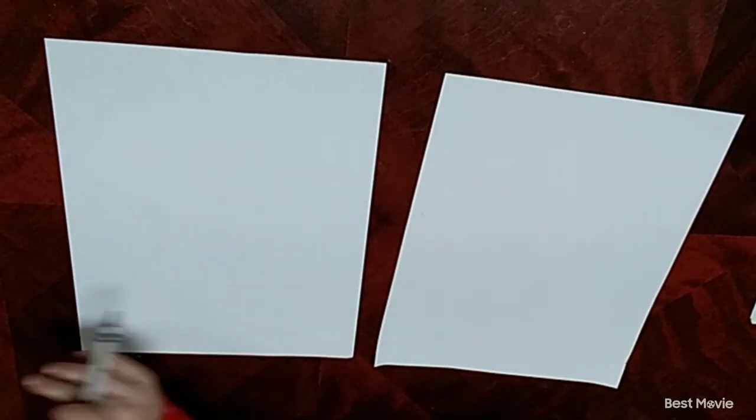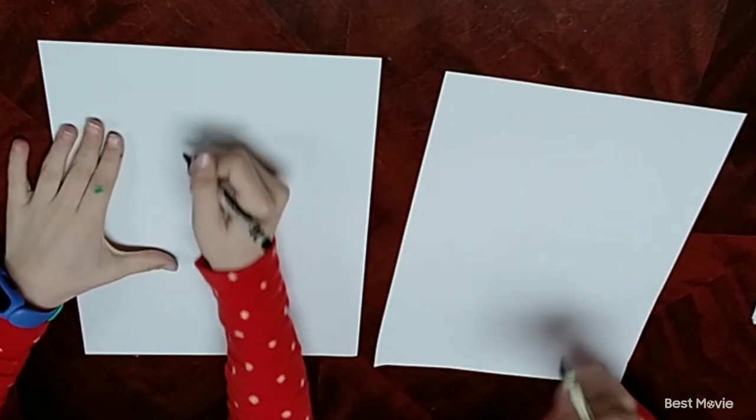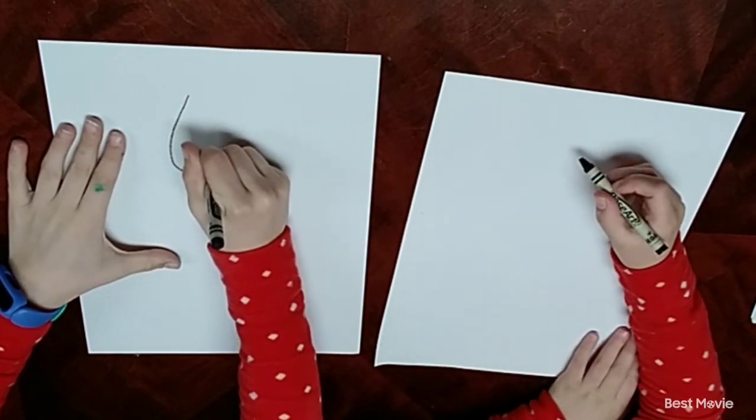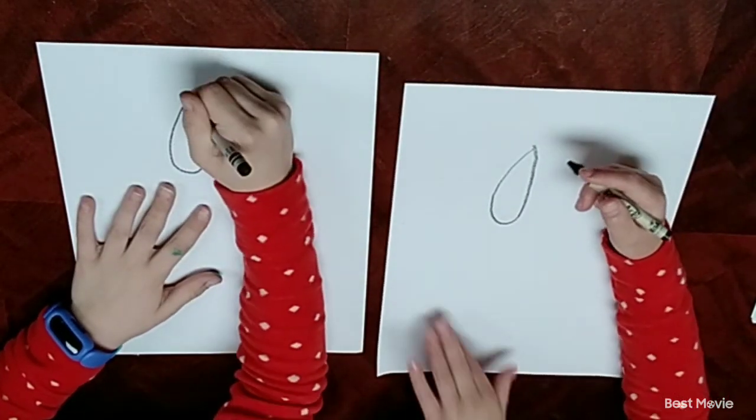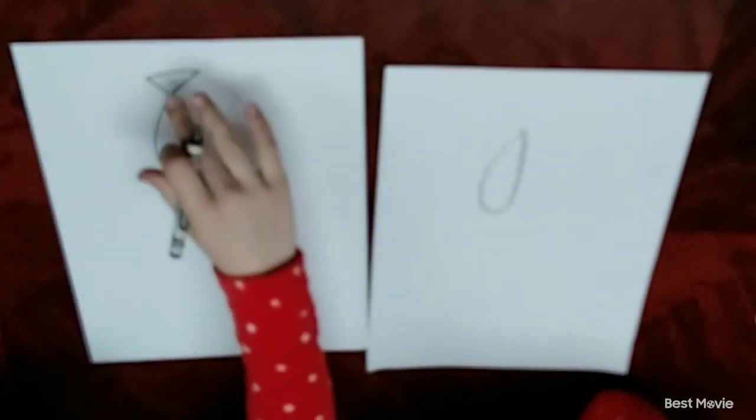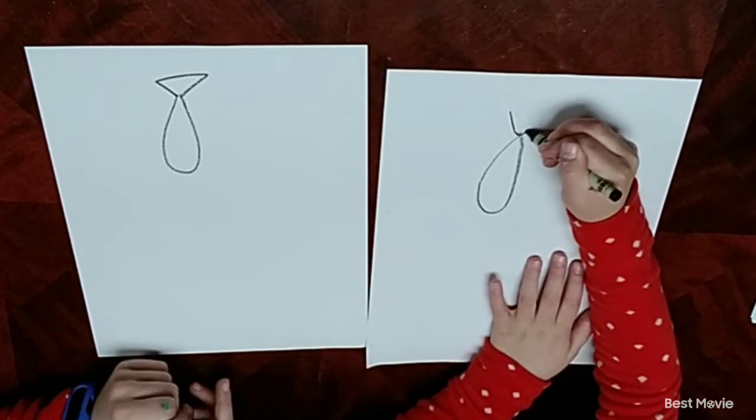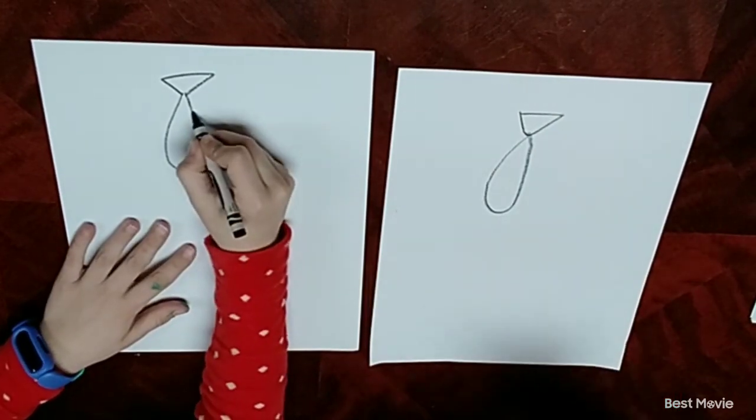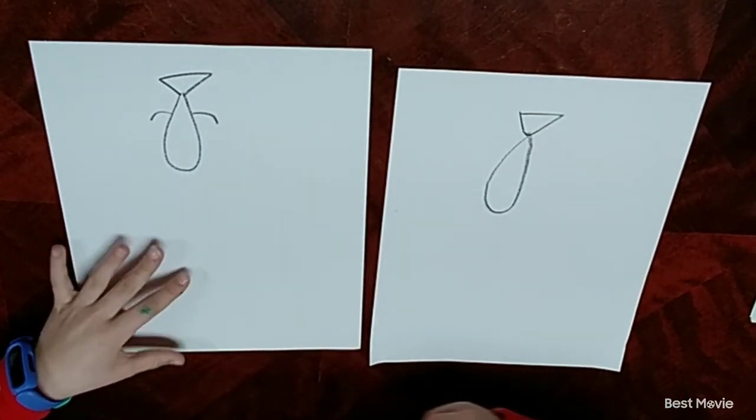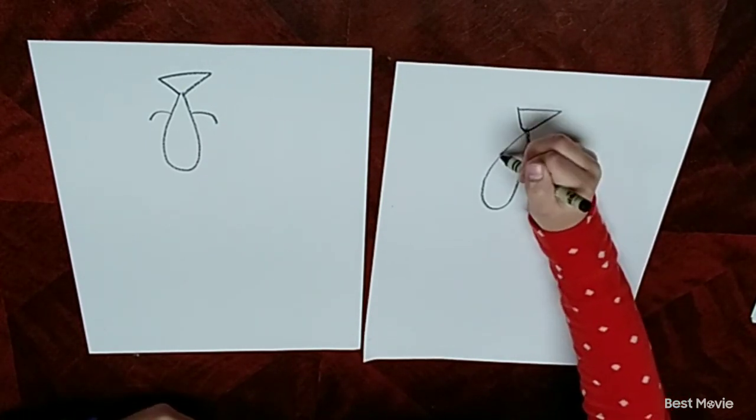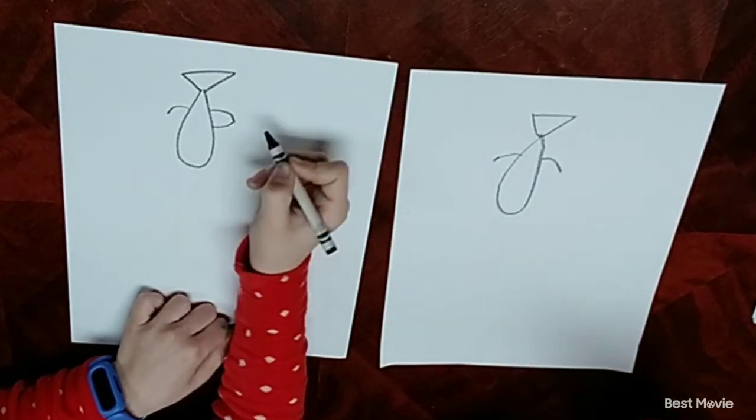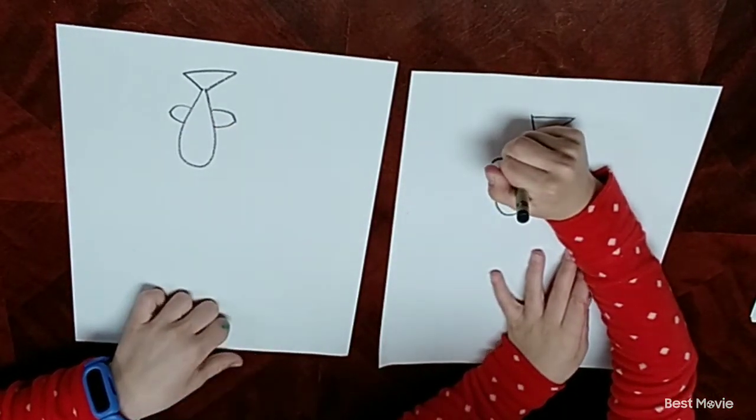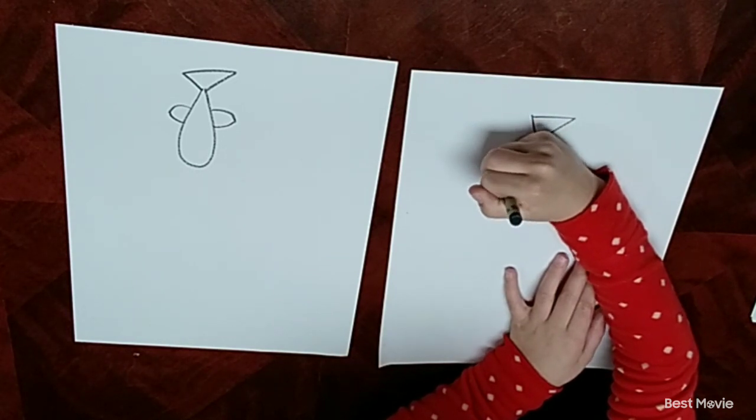So first we are going to draw the catfish. For the catfish you're going to need to draw a tear shape. Now draw a triangle for its tail. You can draw two sea things and you can pause the video if you need more time. Now you're going to connect them to the ground.